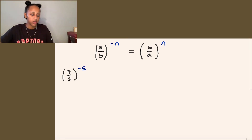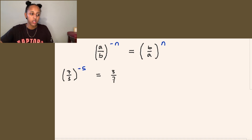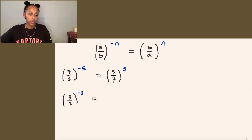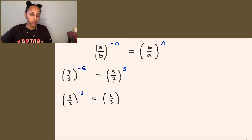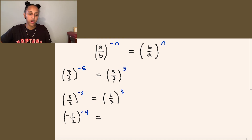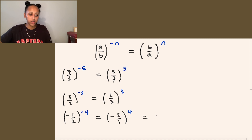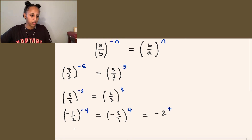Let's look at some examples. We have 7 over 3 to the power of negative 5 — flip them to get 3 over 7 to the power of 5. The second example: 3 over 2 to the power of negative 3 becomes 2 over 3 to the power of positive 3. Similarly, we have negative 1 over 2 to the power of negative 4. The negative in the base remains the same, so it becomes negative 2 over 1 to the power of positive 4 — or simply negative 2 to the power of 4.